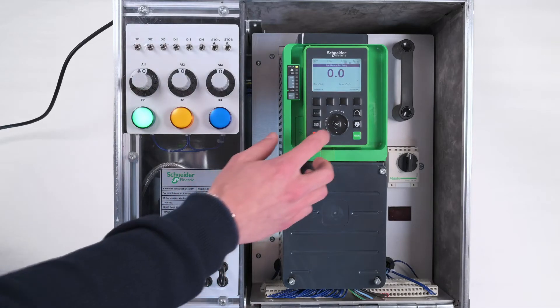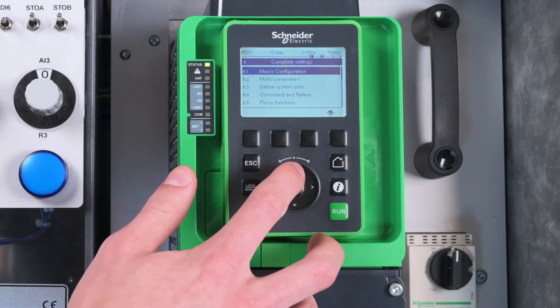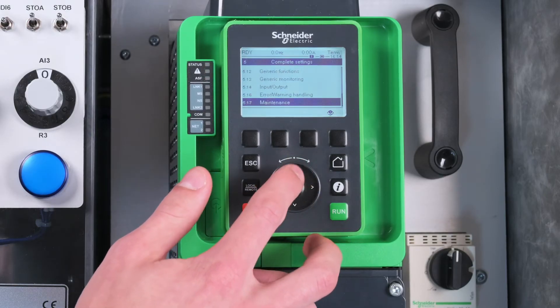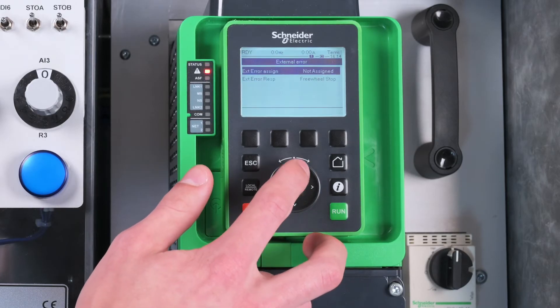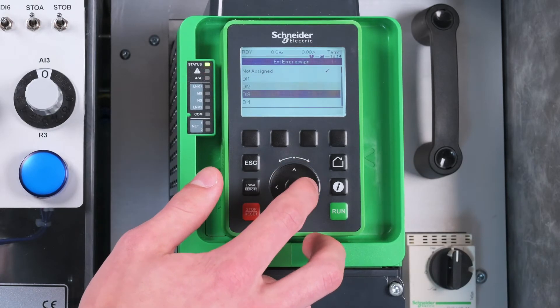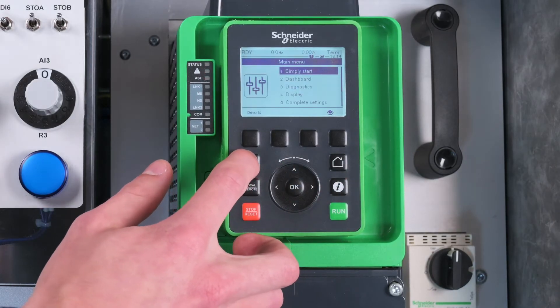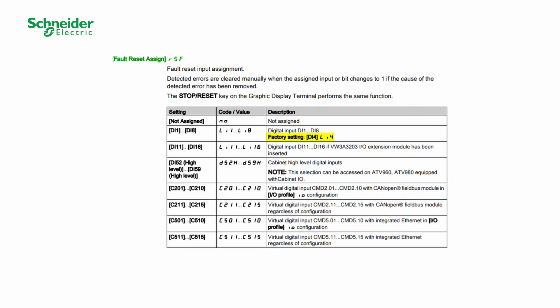First, let's start programming the DI. To begin, we are going to assign the external error to the Digital Input DI3. Then, we are going to use the Fault Reset function. By default, the Fault Reset function is assigned to DI4.